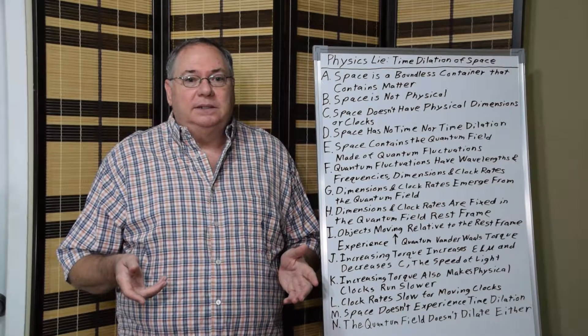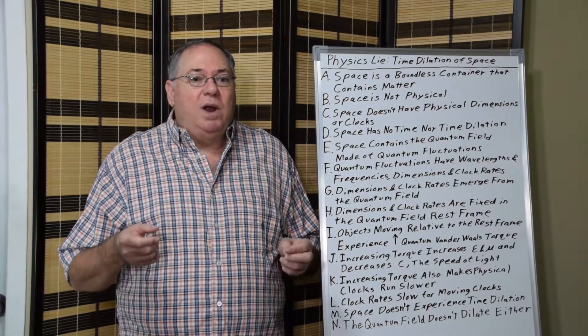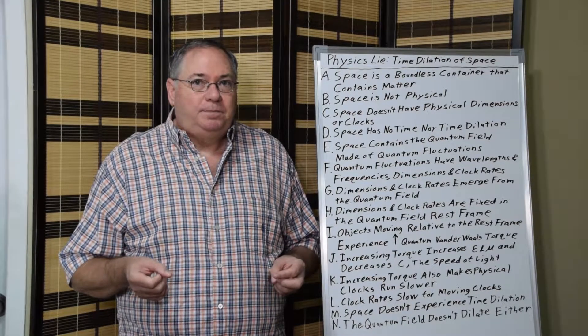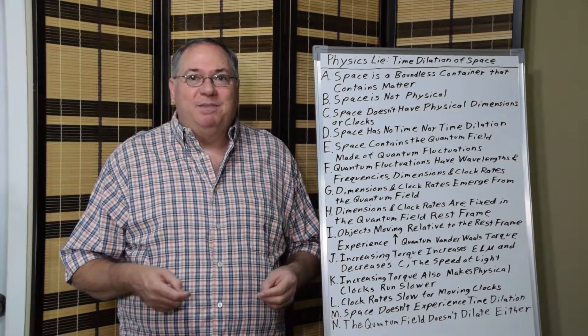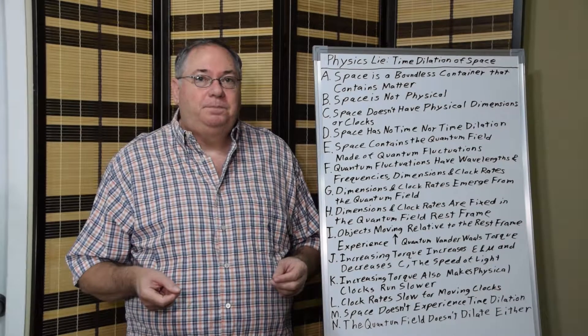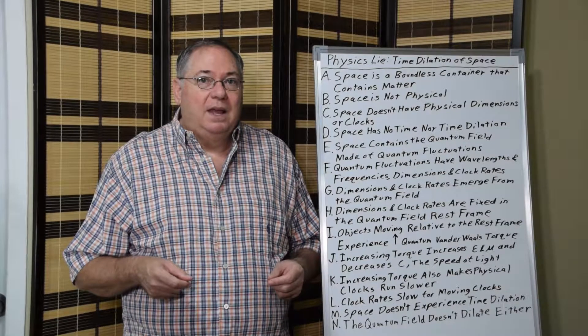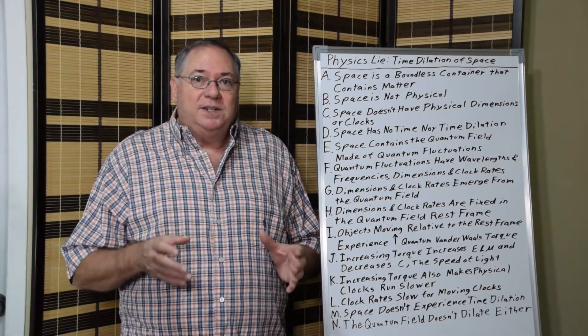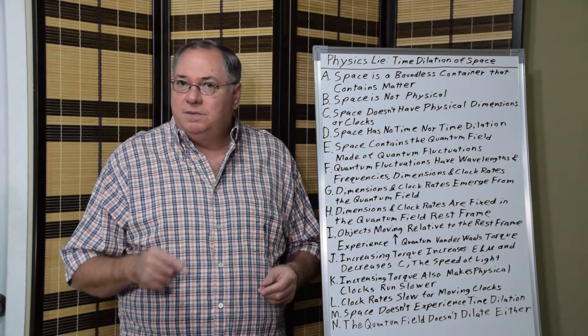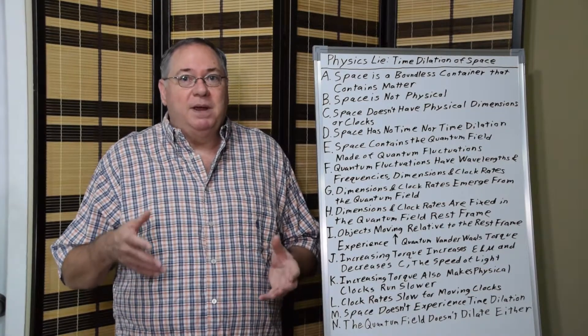In reality, what happens is space has a quantum field. There's quantum fluctuations everywhere. And these quantum fluctuations have wavelengths and frequencies. Wavelengths we measure in meters and frequencies we measure in cycles per second. Quantum fluctuations have dimensions and time, they have physical dimensions and physical clock rates. The thing is, the physical dimensions and physical clock rates emerge from the quantum field theory. They don't emerge from space, non-physical space. They emerge from the physical reality of the quantum fluctuations that make up the quantum field.